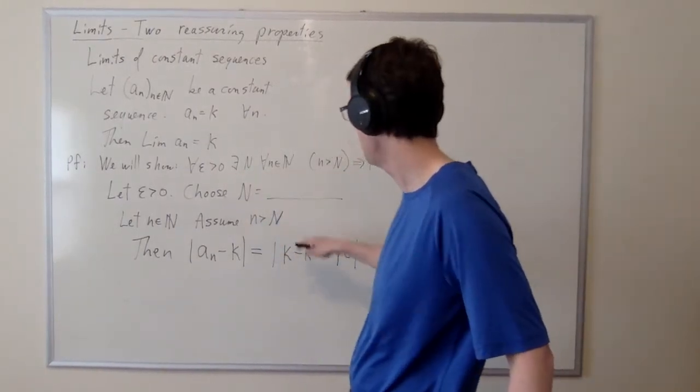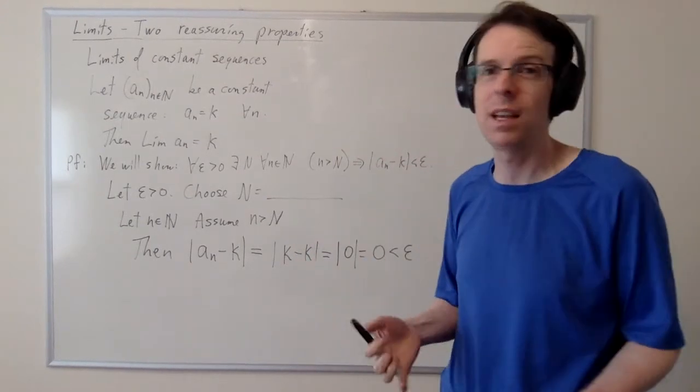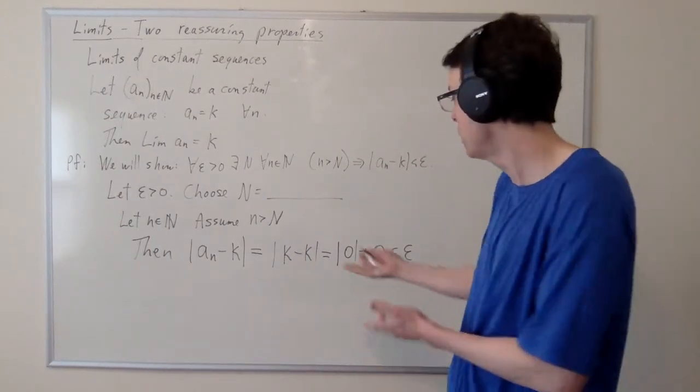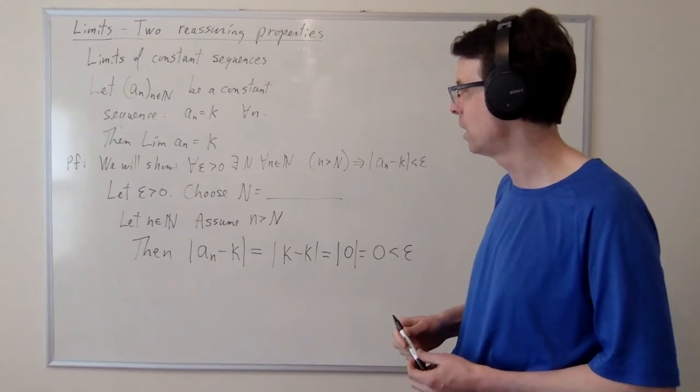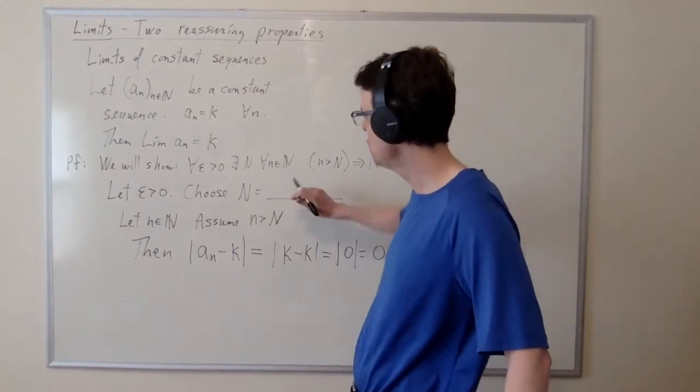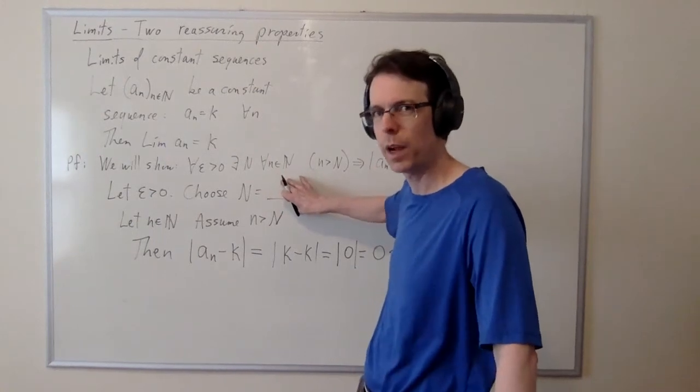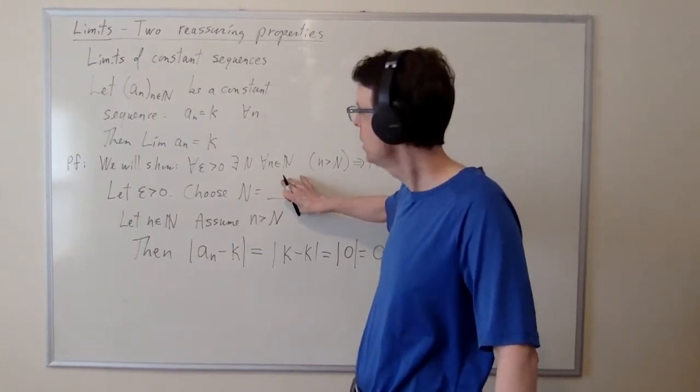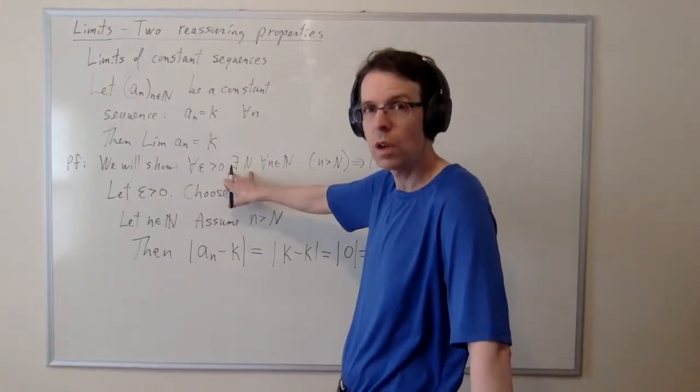But as you see in this proof, it doesn't even matter what cap N was, right? I don't even have to use the fact that cap N was anything. And so like, I don't quite know exactly what to tell you here. You have to fill in a value for cap N for this proof to be correct, because you're effectively asserting that there exists a cap N. So something has to be placed here for this proof to be correct.